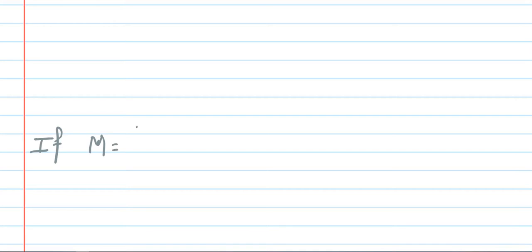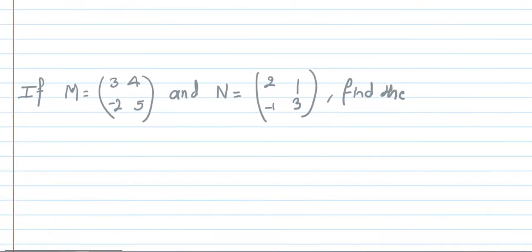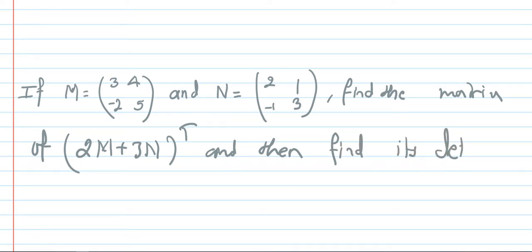If M equals [[3, 4], [-2, 5]] and N equals [[2, 1], [-1, 3]], find the transpose of 2M plus 3N and then find its determinant.